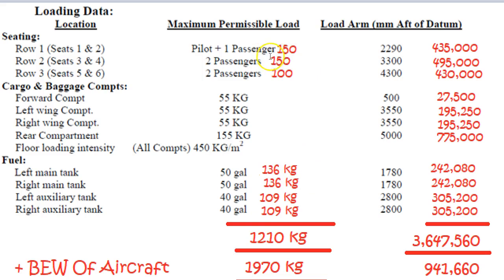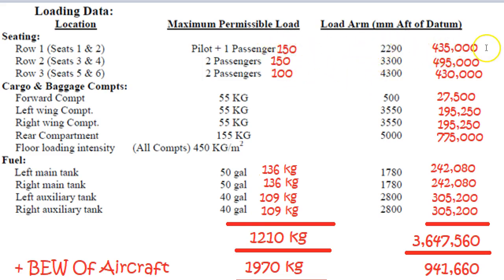First of all, we've got to plug in some weights. Let's go with 150, 150, 100 — even though I think it's 150, 140, and 130 or something like that. So you multiply out 150 by your arm and you end up with that number there: 435,000. Then you do the same for that one, and the same for that one.